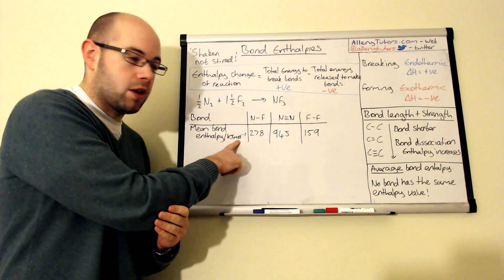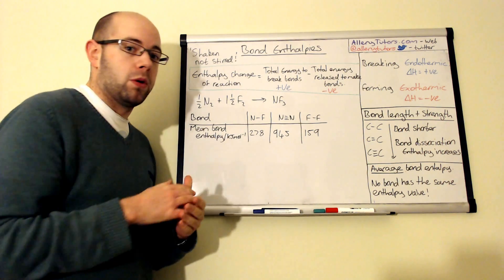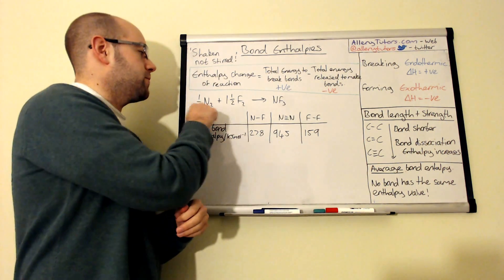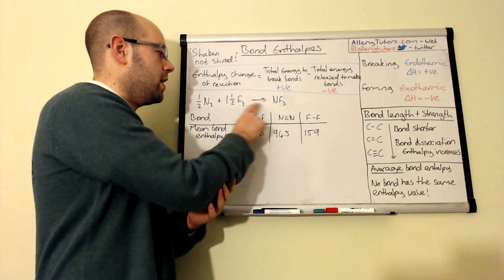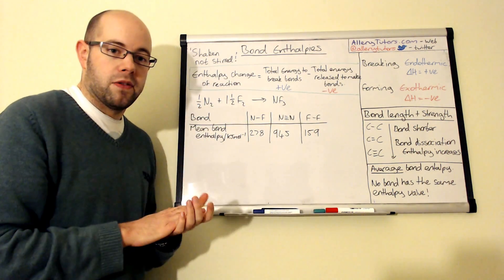But this is important because this is actually per mole of substance. So this is okay if we have one mole of bonds, but you can see that in this equation we have different amounts. We have one mole here, one and a half here, and half over there.